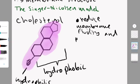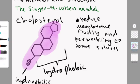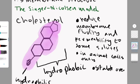So what this does, it reduces membrane fluidity, it reduces the permeability to some solutes, specifically hydrophilic ones. It is only found in animal cells, and it leads to the membrane being stable over a wider range of temperatures.